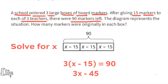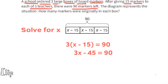3 times x equals 3x minus 3 times 15, or 45. So 3x minus 45 equals 90. To get x by itself, we need to add 45 to both sides of the equal sign: 3x minus 45 plus 45 equals 90 plus 45, leaving us with 3x equals 135.